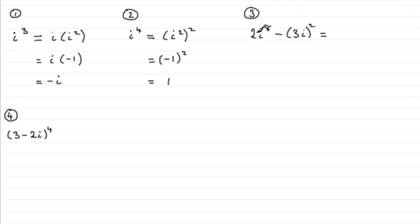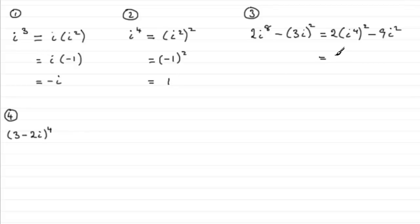As for number 3: 2i to the power 8 minus 3i all squared. Well, we've got the 2, and i to the power 8 I would see as i to the power 4 all squared, and then minus 3i all squared. If we square the 3 we get 9, and that's going to be multiplied by i squared — so we've got 9i squared there. Now i to the power 4 is 1, so we've got 2 times 1 squared, which is simply 2. And for this term, we've got minus 9 being multiplied by i squared. i squared is minus 1, so minus 9 times minus 1 is plus 9. And that gives us 11.